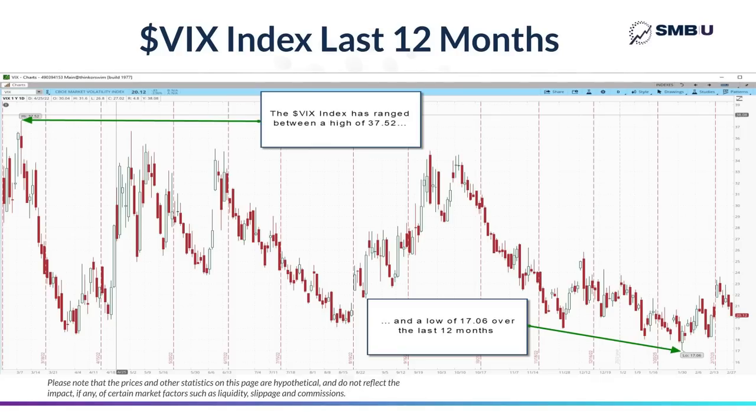And what we realized was that the VIX dropping into that 17 to 20 area seemed to be a pretty good indicator that the market was beginning to find a short-term top and that a sell-off would not be far off into the future if the VIX in fact dropped into that 17 to 20 level.